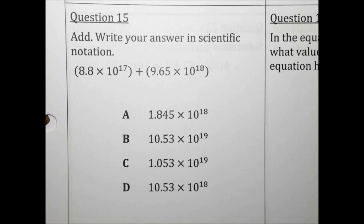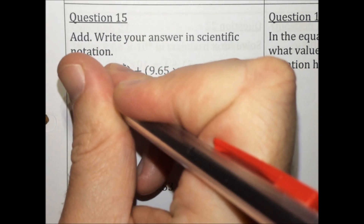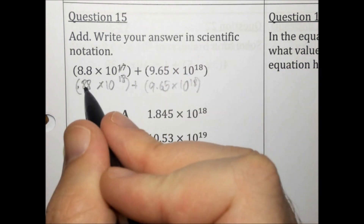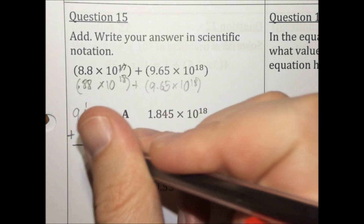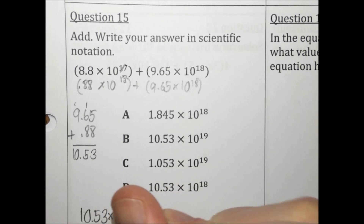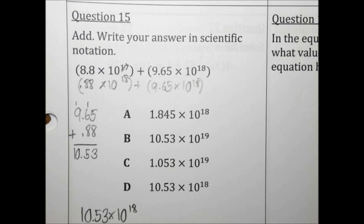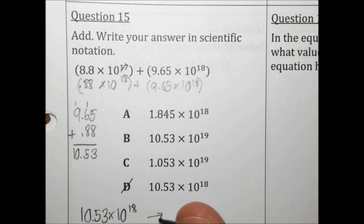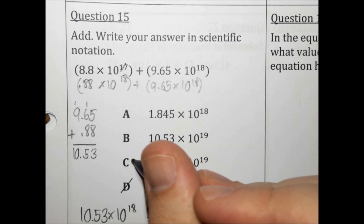Add and write your answer in scientific notation. To add these, the exponents need to match. I always pick the lower one to make it higher — when you make the exponent higher, the number out front needs to get smaller. So this becomes 0.88 times 10 to the 18th plus 9.65 times 10 to the 18th. When you add, you just add the numbers out front: 9.65 plus 0.88 is 10.53. But 10.53 times 10 to the 18th is not in scientific notation — 10.53 is too big. So we rewrite it as 1.053 times 10 to the 19th. That's choice C.